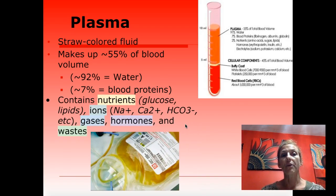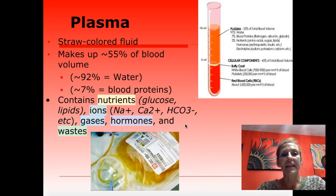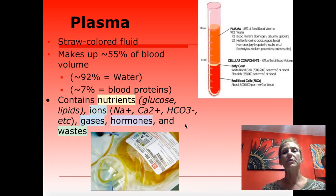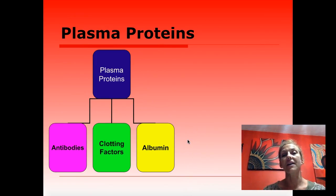Blood also contains nutrients like glucose that we use to make energy, lipids, ions like sodium and calcium — which we've discussed with action potentials — bicarbonate, which we'll cover in the respiratory system, gases like oxygen and CO2, and hormones, which are chemical messengers. Hormones are produced by a gland and travel via blood to a target organ where they carry out a function. Plasma also removes waste like urea.